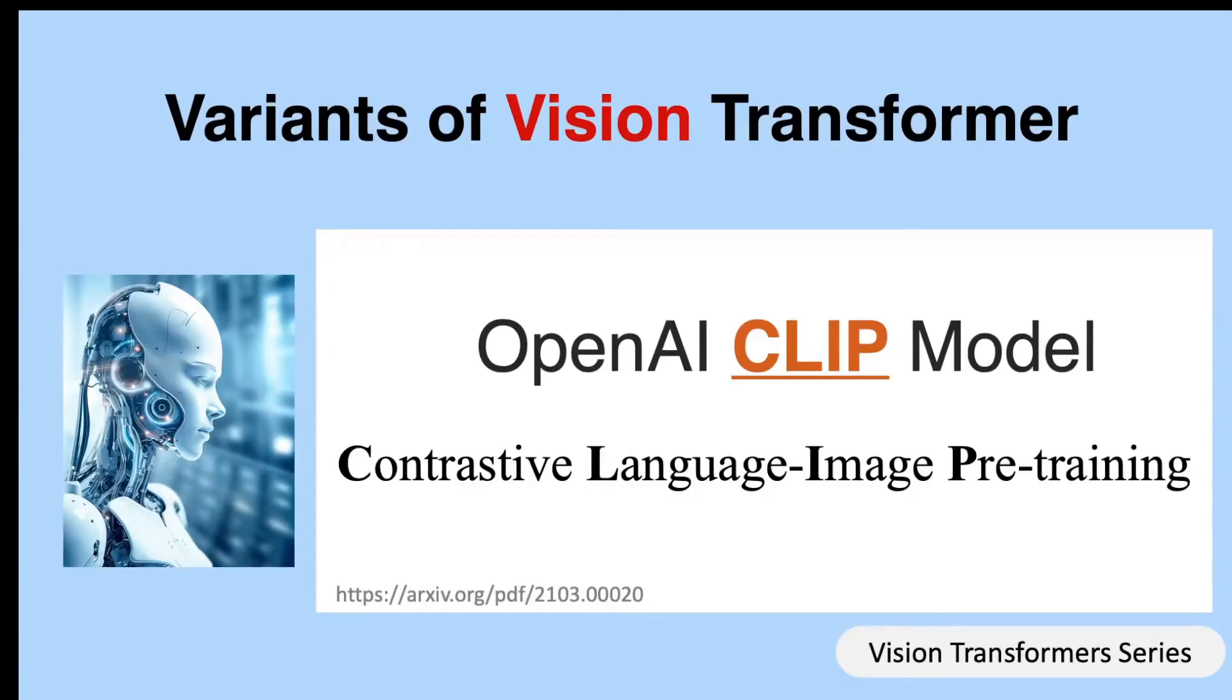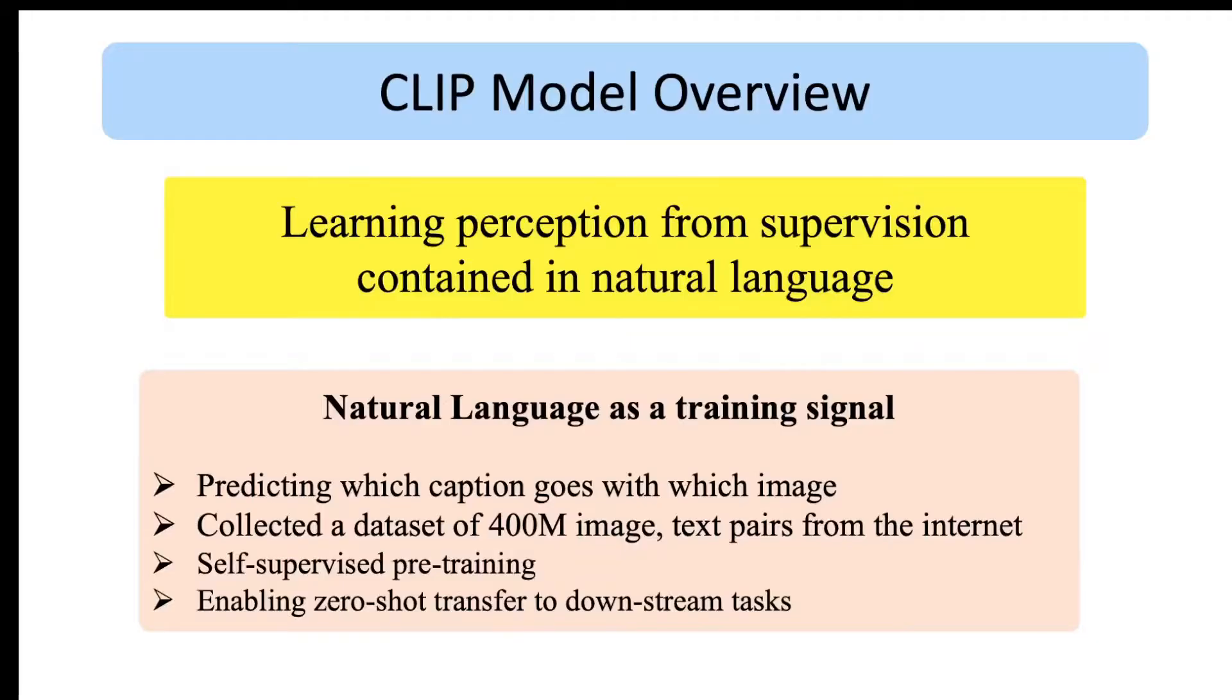Hi everyone, in this video we are going to cover the CLIP model proposed by OpenAI: Contrastive Language-Image Pre-training. The main idea of CLIP is based on natural language supervision, using self-supervised pre-training on a very large dataset of image-text pairs collected from the public domain. CLIP has several use cases, one of which is zero-shot transfer.